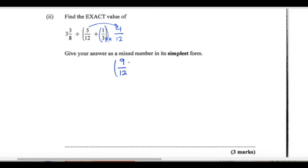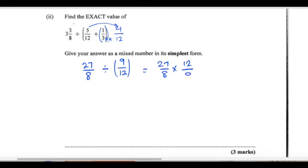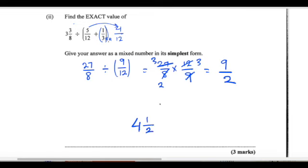And that 9 over 12 in the brackets is dividing — 3 and 3 is... 8 threes are 24, 25, 26, 27 over 8. And we know to flip and multiply: 27 over 8 multiplied by 12 over 9. So 9 threes are 27. 4 into 8 is 2, and 4 into 12 is 3. So 3 threes are 9 over 2. So we have 4 twos at 8, and 1 is 9: 4 and a half.